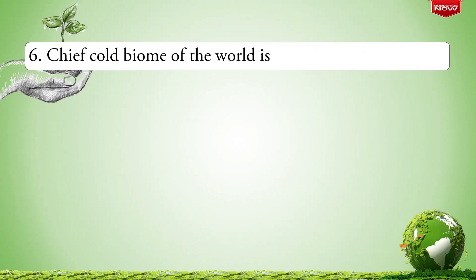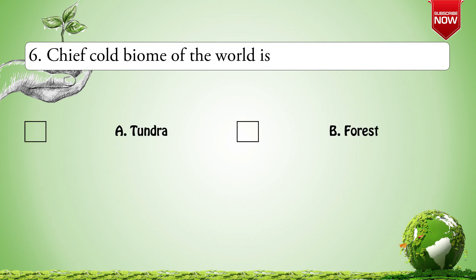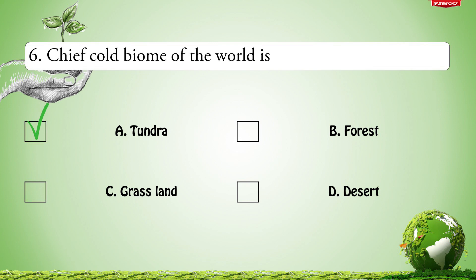Next question: The chief cold biome of the world is — Options are: A. Tundra; B. Forest; C. Grassland; D. Desert. The correct option is Tundra.